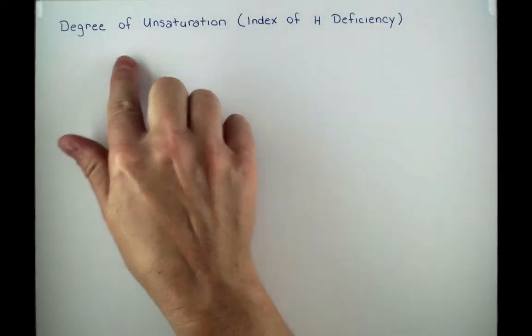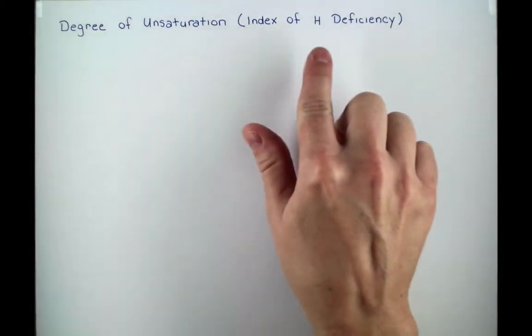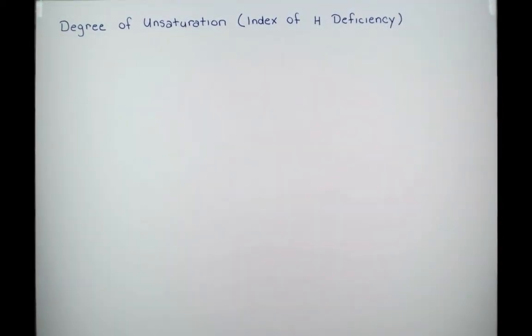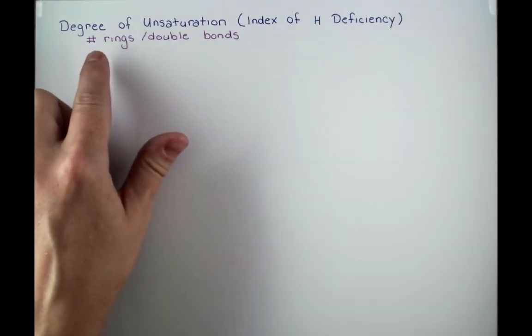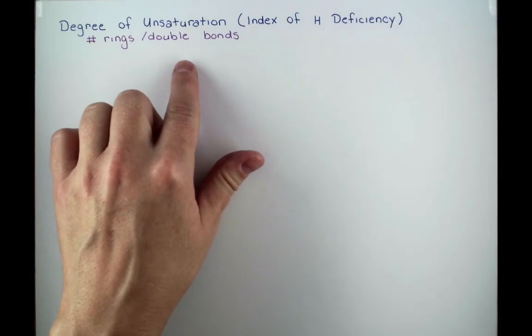In this lesson, we're going to go over the degree of unsaturation, which is also called the index of hydrogen deficiency. What this is going to tell us is the number of rings or double bonds in our compound.